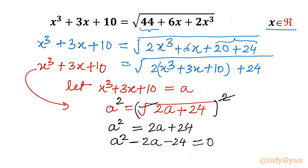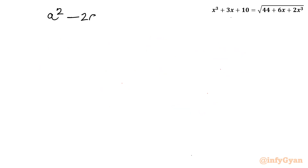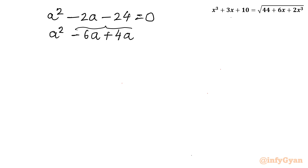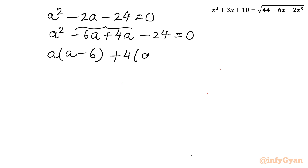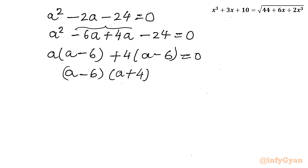Now I can factorize: 6 times 4 gives 24. So I can write 2a as 6a − 4a. Let me write: a² − 6a + 4a − 24 = 0. Taking a common from the first two terms gives a(a − 6), and 4 common from the last two gives 4(a − 6). Using factorization we will find our a.